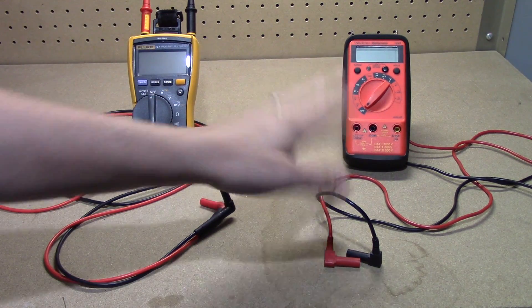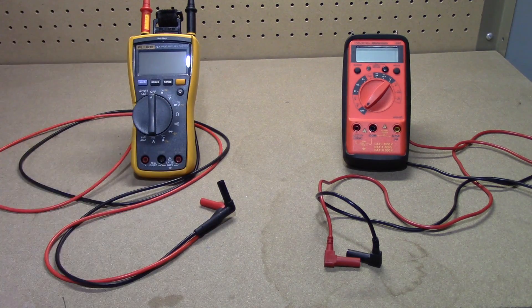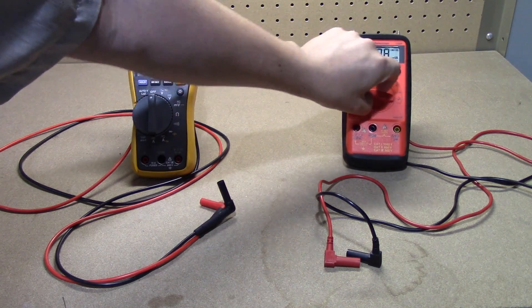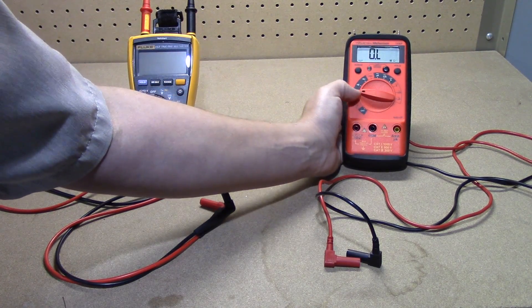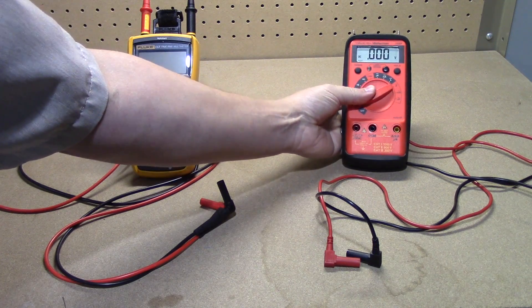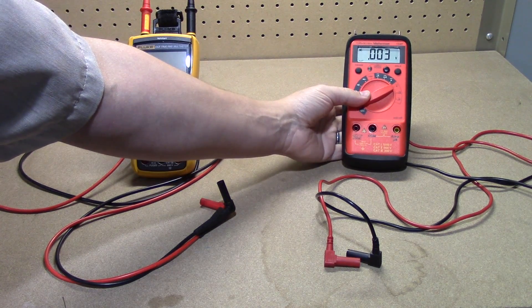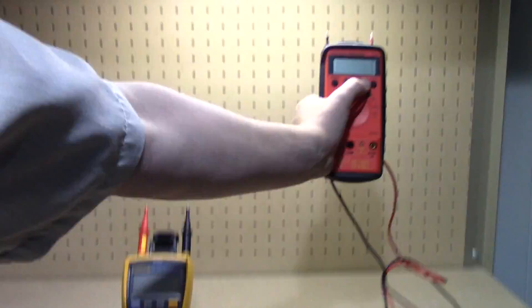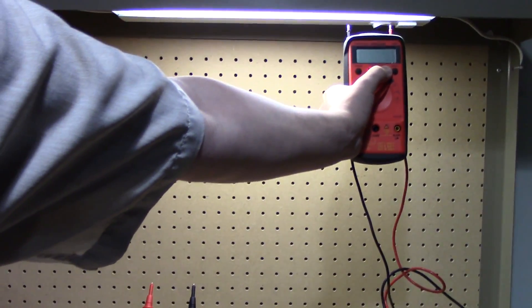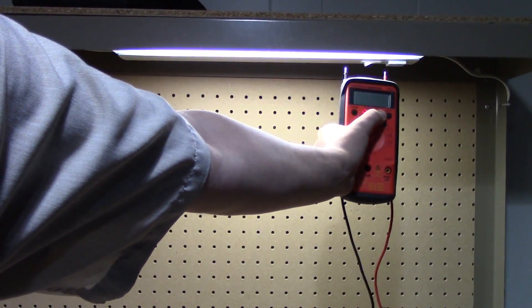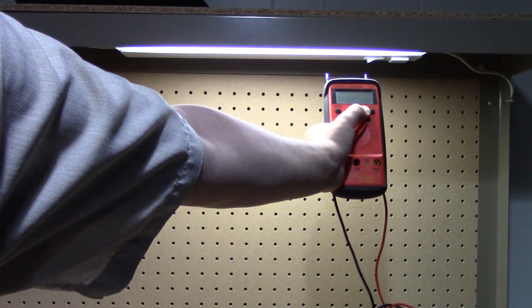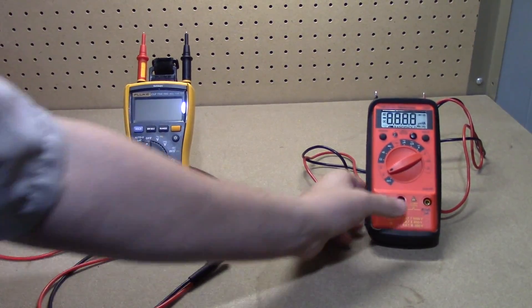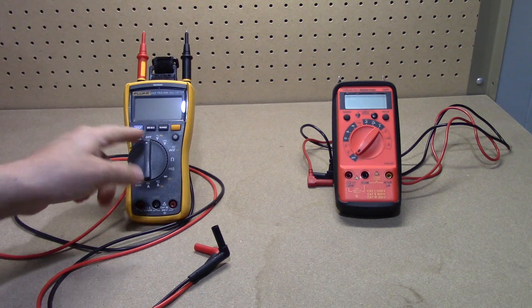Now just because something is inexpensive or cheap doesn't mean you lose out on every functionality. This one still has a feature where it allows you to sense AC voltage without actually touching it. It's making a noise and a little red light is illuminating when it gets close to AC current. You'll notice this one didn't force me to turn it on in order to do that.